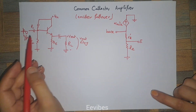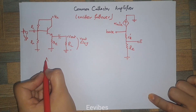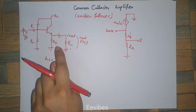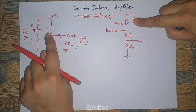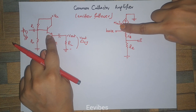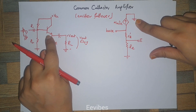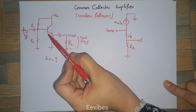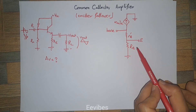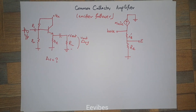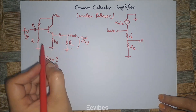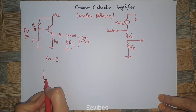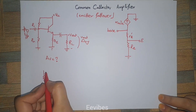Let's start the analysis of the common collector amplifier and evaluate the voltage gain. We have drawn the AC equivalent circuit. The transistor equivalent circuit is replaced with a dependent current source, which is alpha times IE. The collector is at AC ground because VCC is replaced by ground. At the base point, the internal emitter resistance RE is present. When drawing the equivalent circuit, the VCC point is replaced with ground, and R1 is connected at the base.